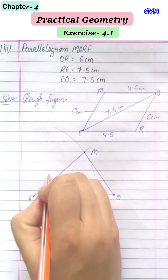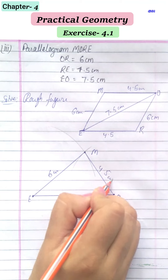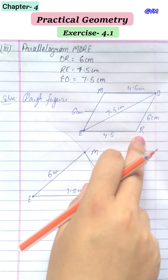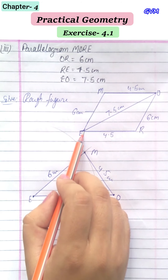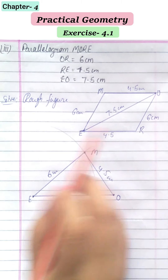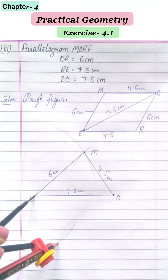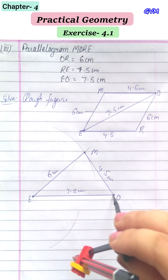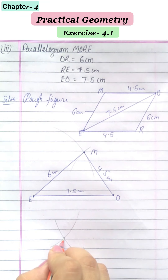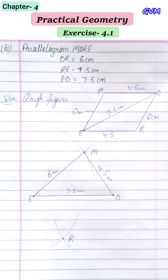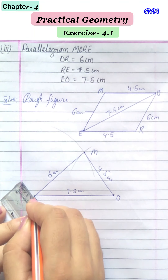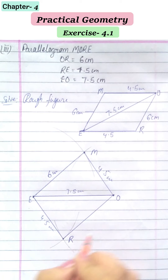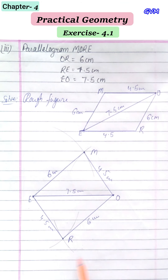EM = 6 cm, OM = 4.5 cm, and EO = 7.5 cm. Now on the opposite side, take 4.5 cm from E and draw an arc for point R. From O, take 6 cm and draw another arc. The intersecting point is R. Join RE and OR. So RE = 4.5 cm and OR = 6 cm, and this is the required parallelogram MORE.